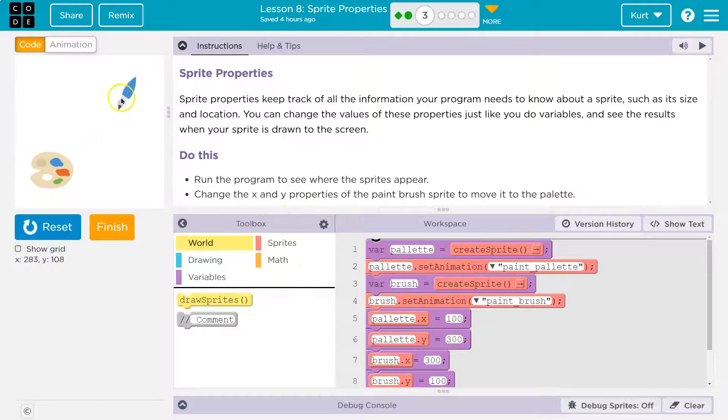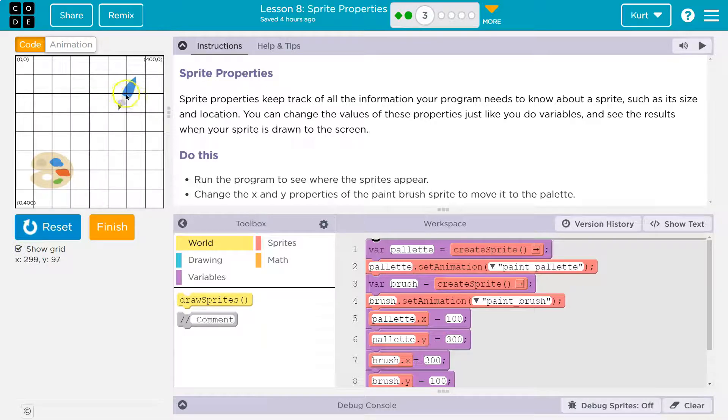So I want to change the x and y properties of the paintbrush. Well, the x and y properties are just the x, y location, right? So if I look at my paintbrush here, the x, y location right now roughly, and you can look down here, it shows you looks like 300, 100. Let's go see.